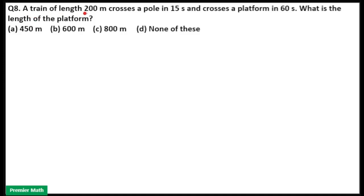A train of length 200 meter crosses a pole in 15 seconds and crosses a platform in 60 seconds. What is the length of platform?